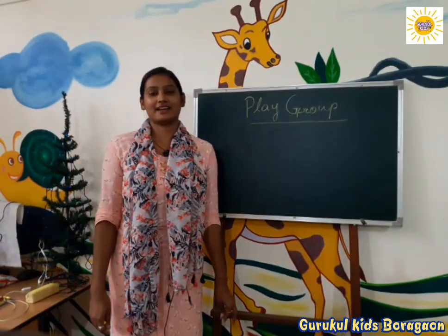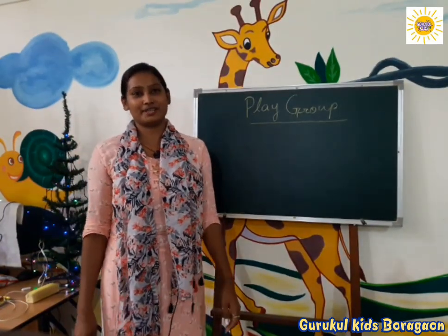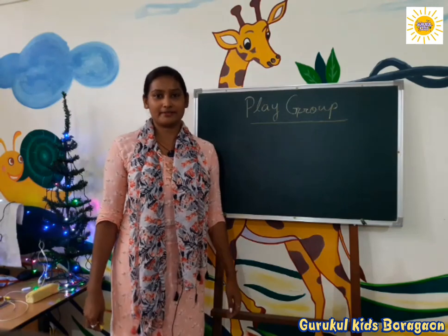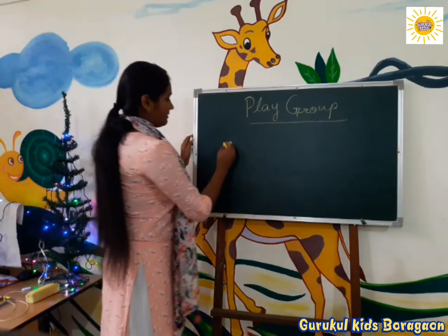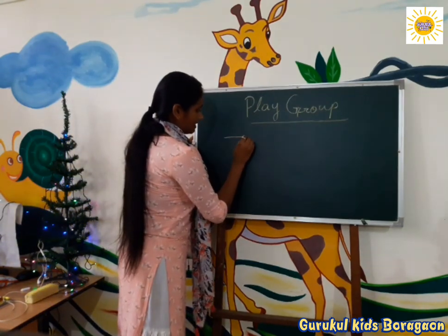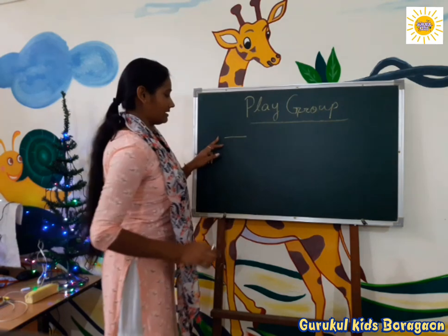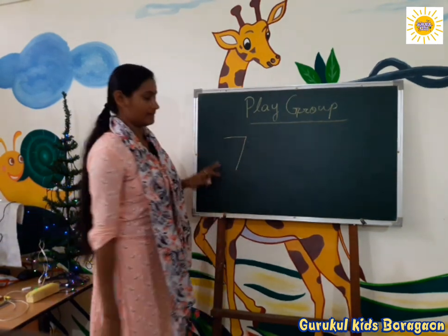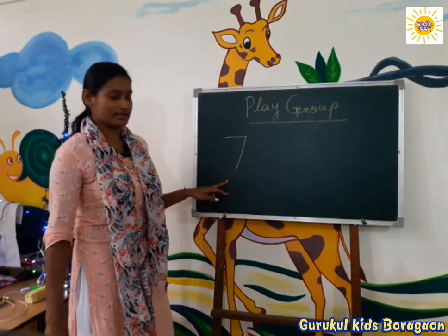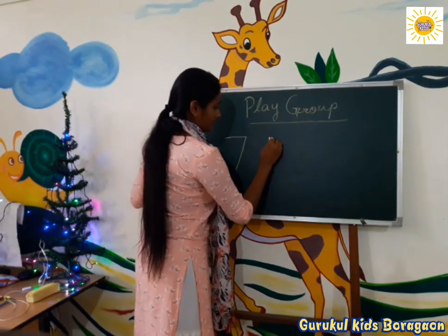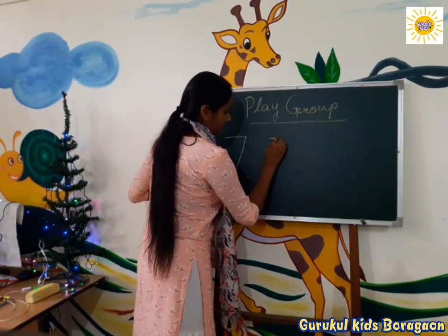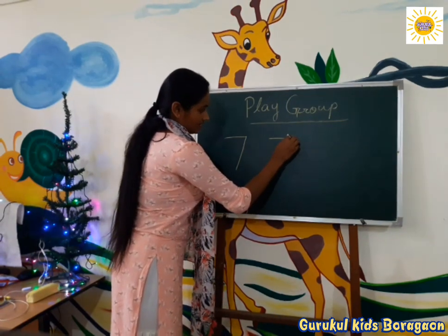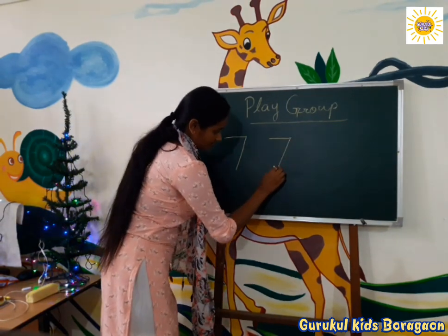Hello kids, how are you today? We will learn a new number — number seven. First, a sleeping line like this, then a slanting line like this. Once more: first a sleeping line like this, then a slanting line like this.